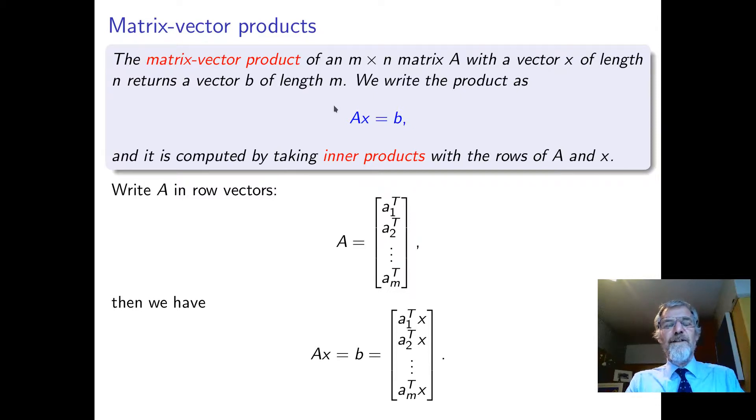The way we compute it is by taking inner products with the rows of A and x. Let's call the rows of A by a_1 up to a_m. If I think of that as a vector, then its transpose is a row. So those are the rows in order. The matrix times a vector means we take each row and dot product it with x. The length of the row, the number of columns, has to be the same as the number of rows of x.